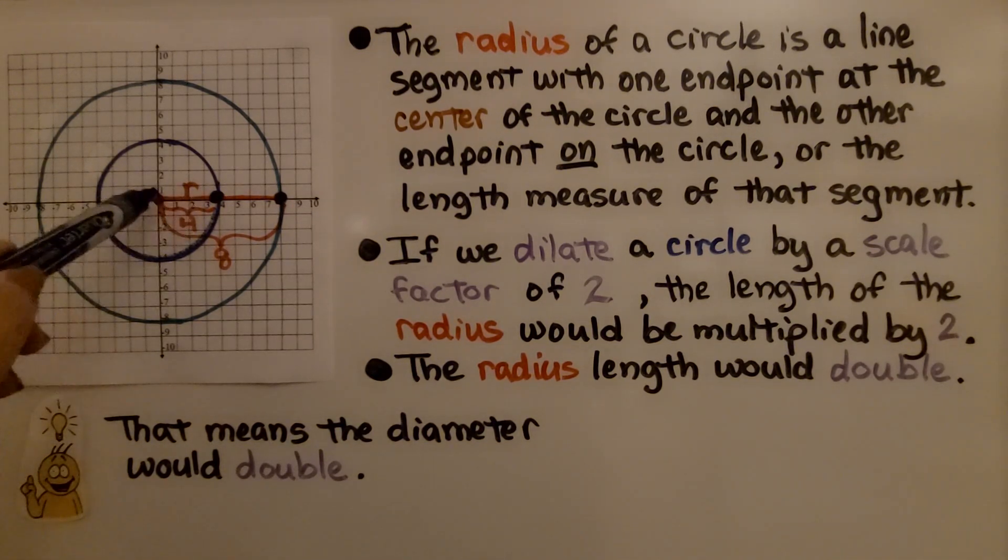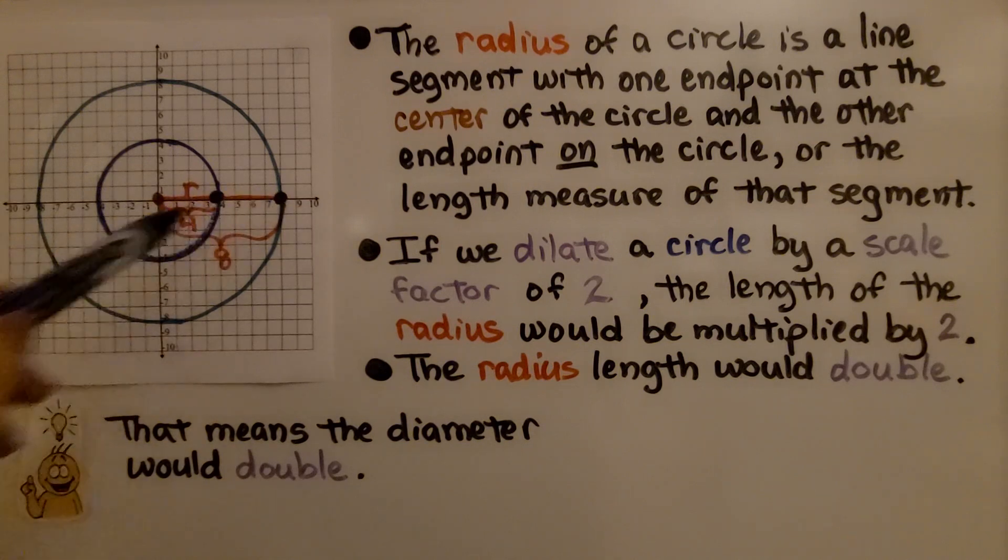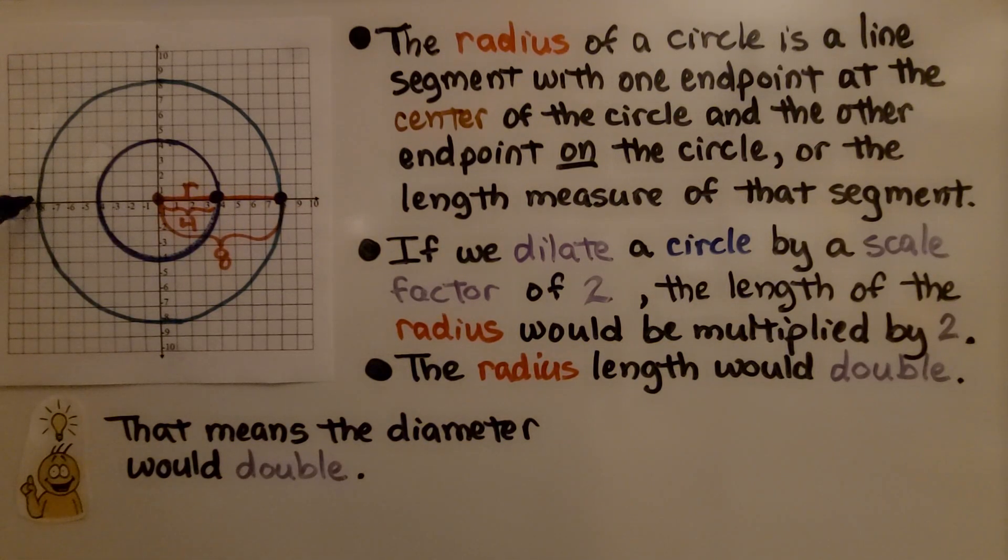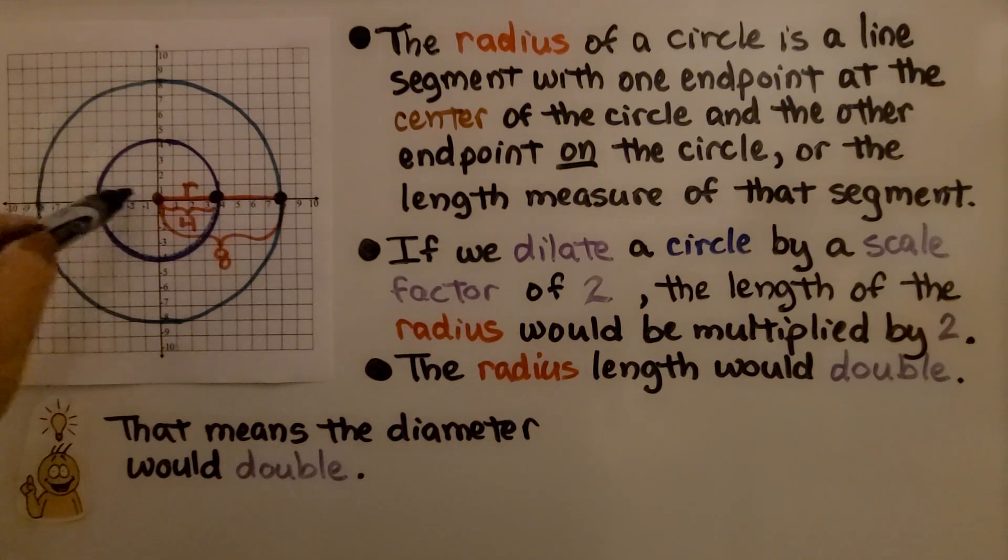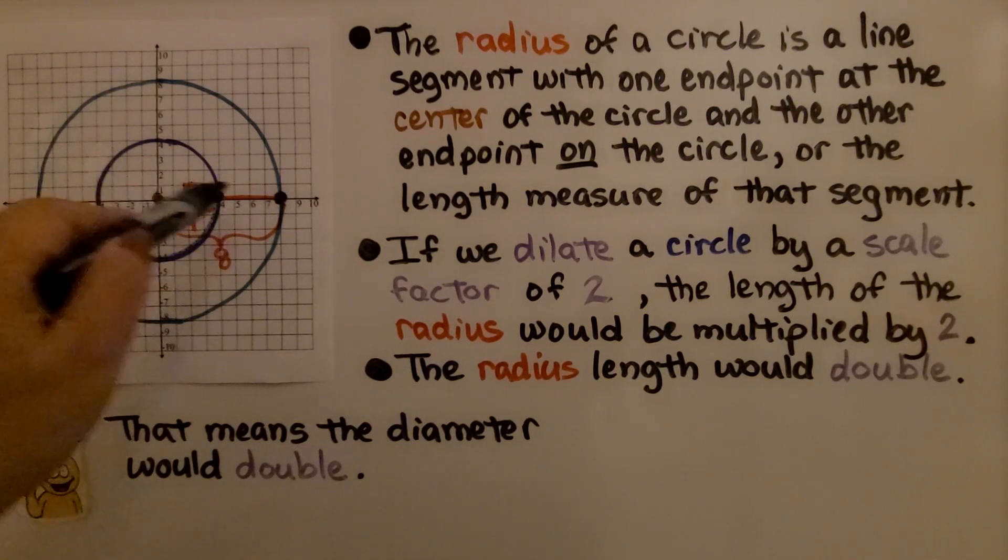It would go from 4 units to 8 units. That means the diameter would double because the diameter goes from one side all the way across to the other side. The diameter goes across the circle through the center point from one side to the other.